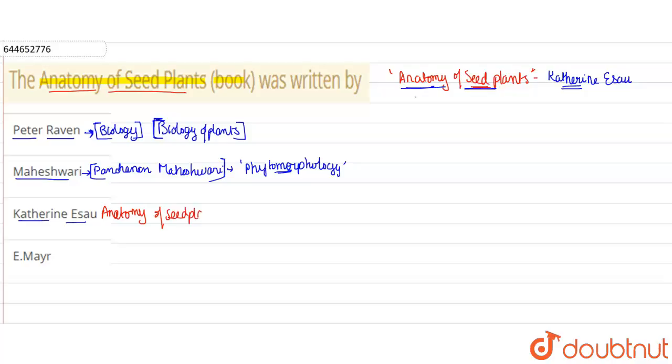The fourth option is E. Mayr. E. Mayr has written multiple books again, just like Peter Raven, but one such book of E. Mayr is 'What Evolution Is'.